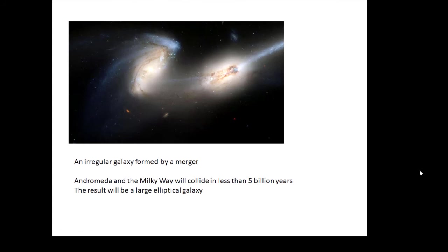Here are two galaxies colliding together to form an irregular galaxy. Interestingly, in about five billion years Andromeda and the Milky Way are going to do this — they will lose their spirals and become an elliptical galaxy.